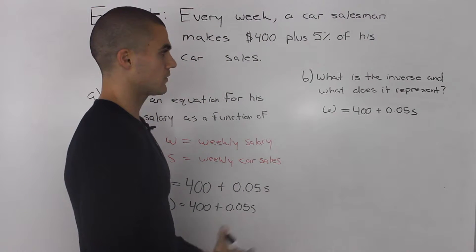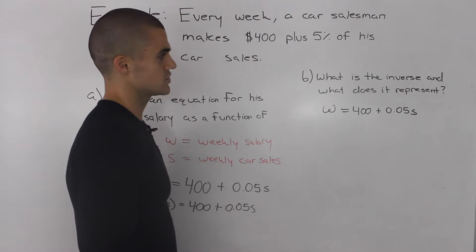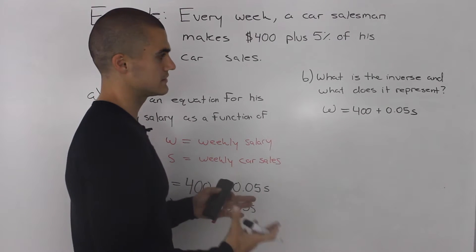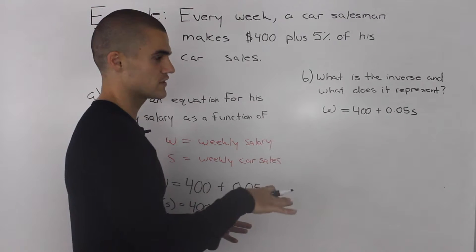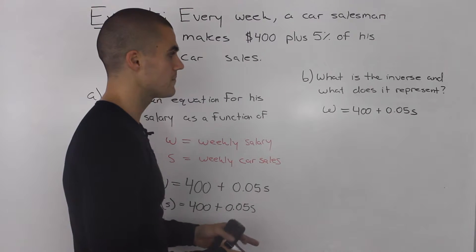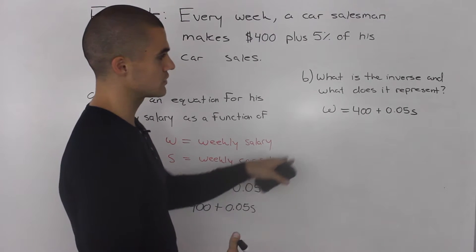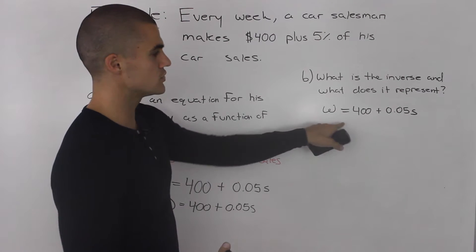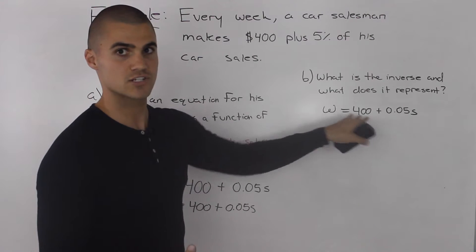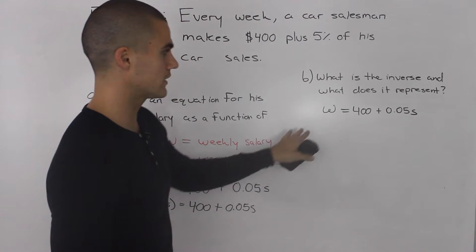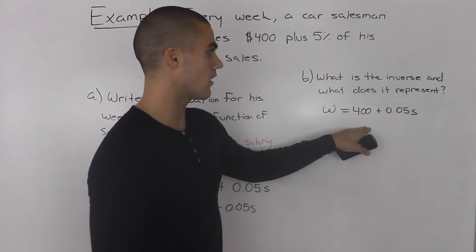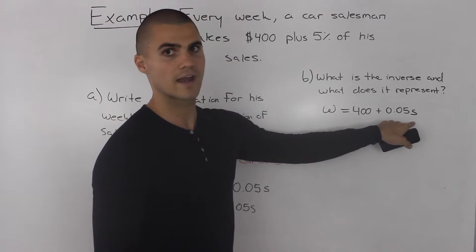Usually when we are dealing with abstract equations, we would switch the independent and dependent variable and then solve for the dependent variable, usually the Y. However, in word problems, when you're finding the inverse, you don't want to do that because these variables actually represent something. You want to keep the same variables where they are, but just isolate for that other variable.